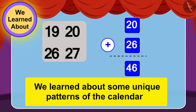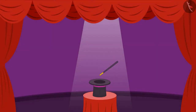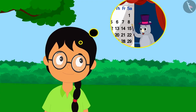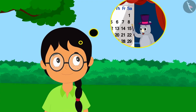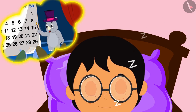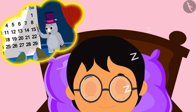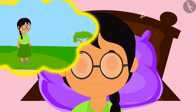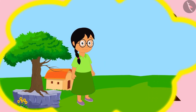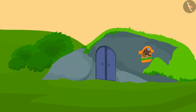Hello children! In the previous video we learned about some unique patterns of the calendar. In this video we will see some more interesting patterns of the calendar. Minu was very excited after seeing Guggu's magic. She went to sleep that night thinking about Guggu's magic, and was dreaming that she knows how to fly. She flew to Guru's house.